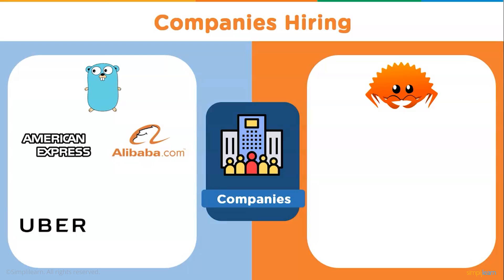Uber Technologies is an American mobility-as-a-service provider that has preferred Go for building many of its new engineering services. Formerly mainly based on Node.js and Python, Golang helps Uber handle a majority of high queries-per-second services, and they have recently written geo-based services in Golang. Next is Alibaba — the Chinese multinational technology company specializing in e-commerce. Alibaba Group's container engine, Pouch Container, is written in Golang and helps run all online transactions across millions of containers.